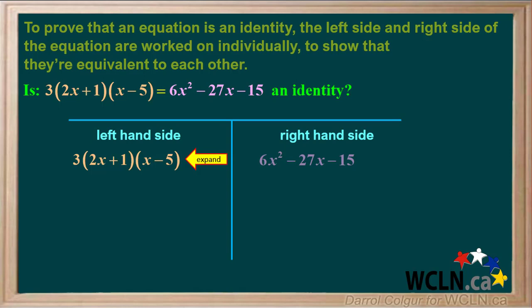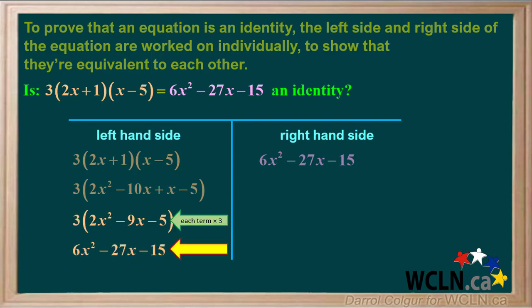One way we could start is by expanding 2x + 1 times x - 5. Using FOIL to expand 2x + 1 times x - 5 gives us this expression. -10x + x is equal to -9x. Now we'll use the distributive property and multiply each term in the bracket by 3. This gives us 6x² - 27x - 15.